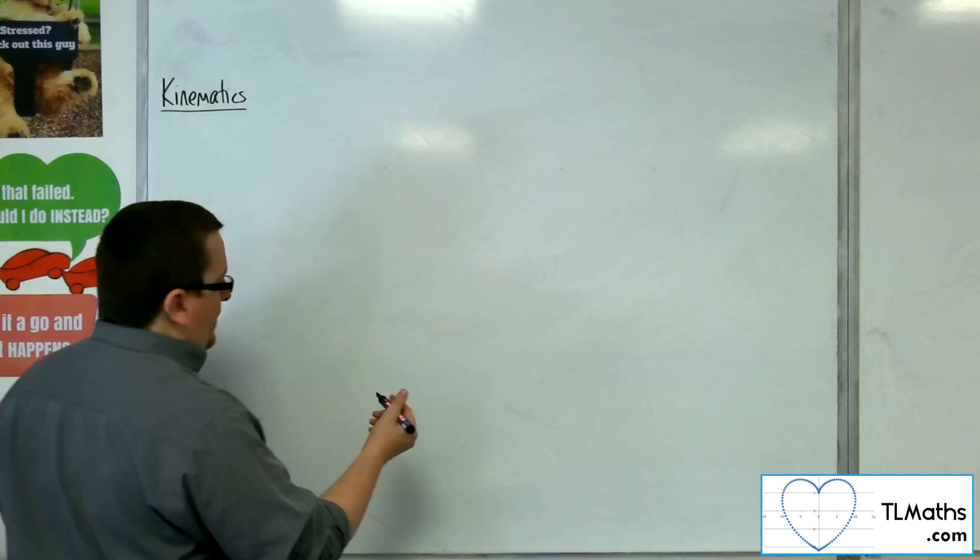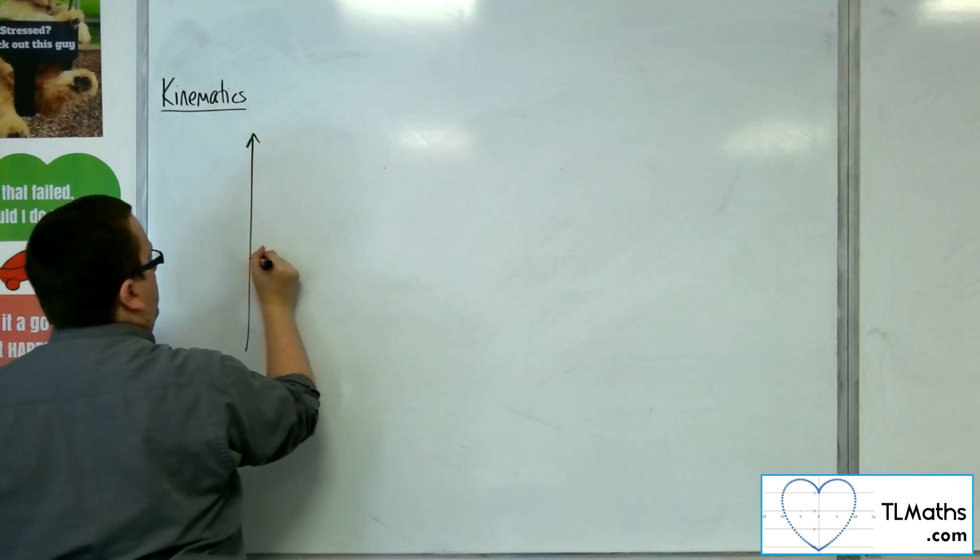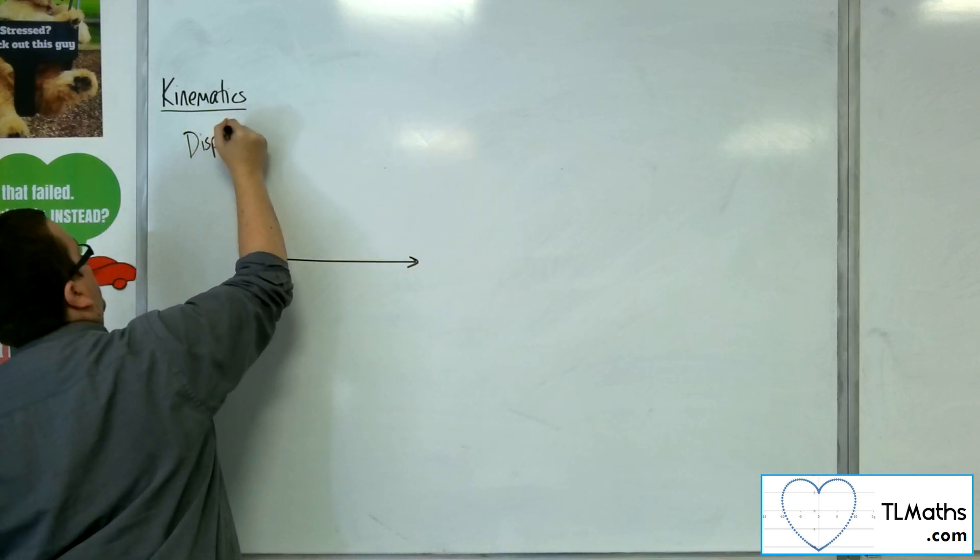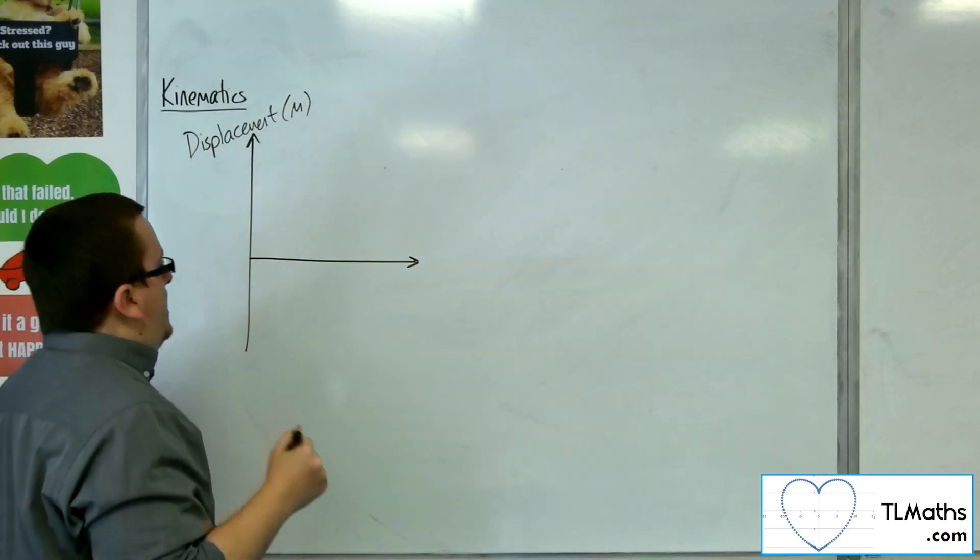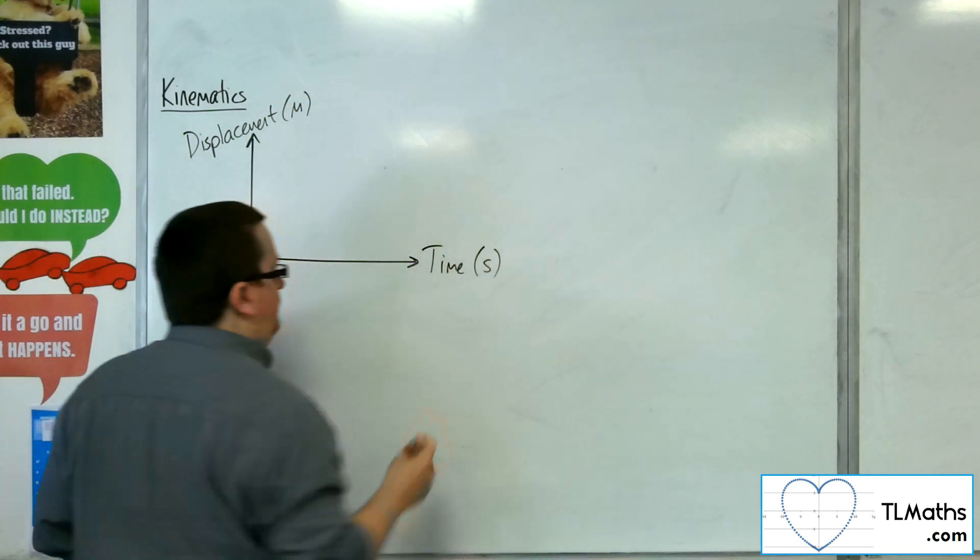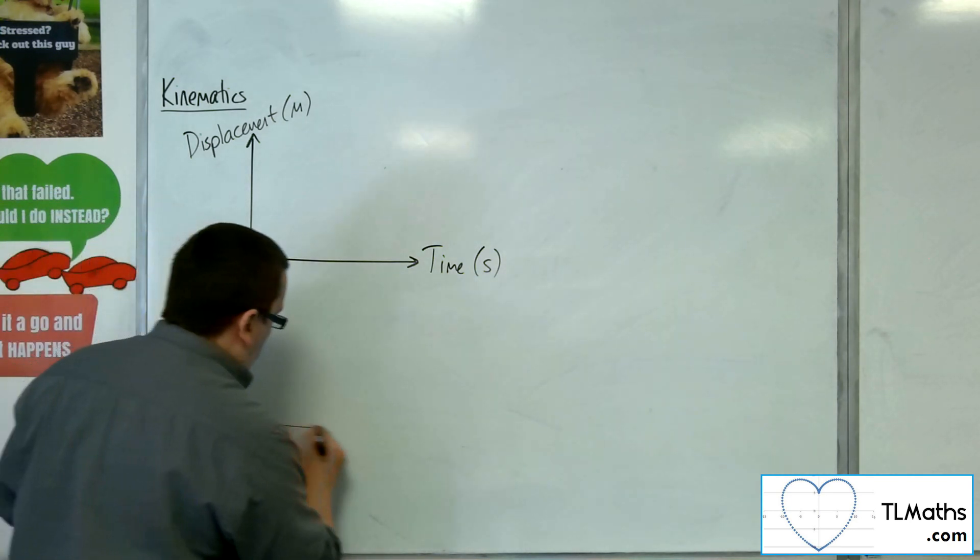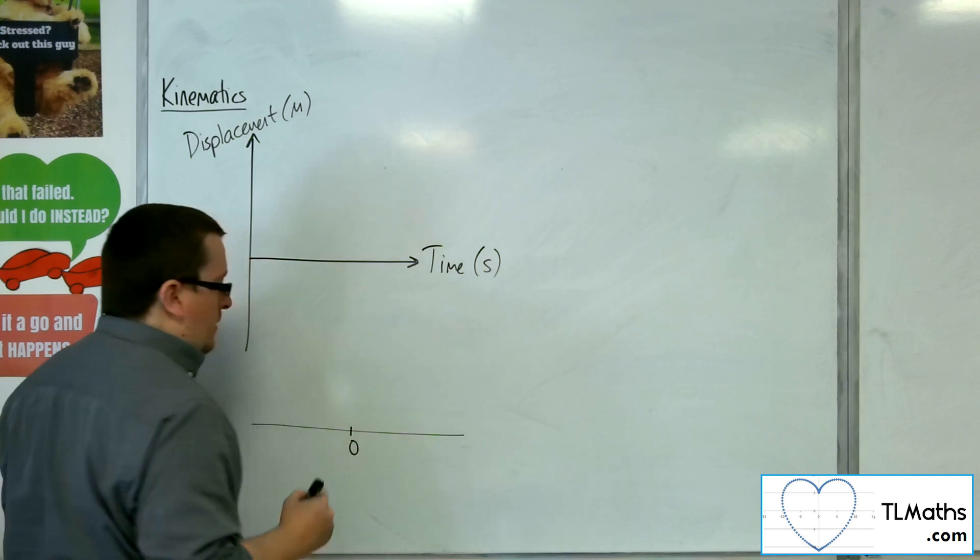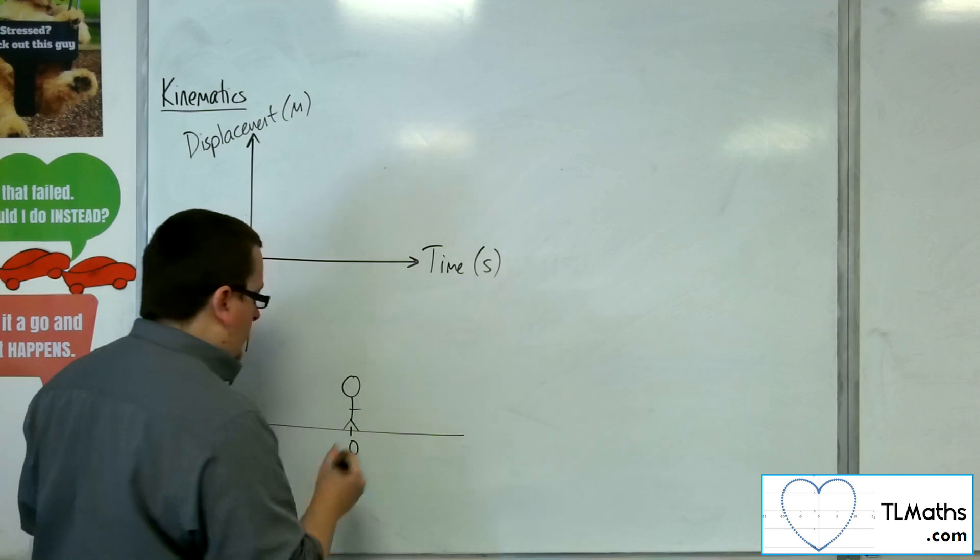So, a displacement time graph might look something like this. The displacement of the particle given in metres, and then we're going to have time in seconds. And let's say we have a person that is positioned at some starting point, the origin. Here they are.